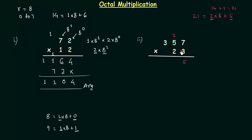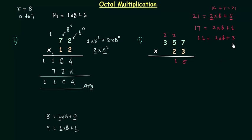3 multiplied by 5 is 15, and 15 plus 2 is 17. 17 is greater than 7, so it is not an octal number. So we have 1 here and 2 will go as carry. 3 multiplied by 3 is 9, and 9 plus 2 is 11. Again we will break 11: 1 multiplied by 8 plus 3. 3 will go here and 1 will go as carry, and finally we have 1 3 1 5.